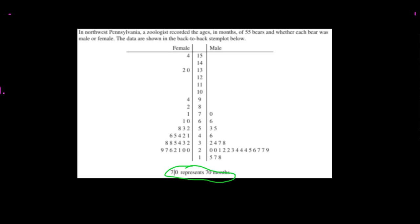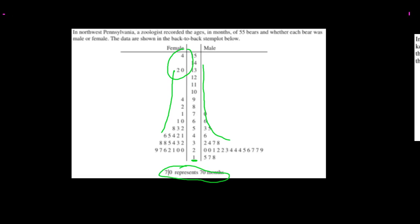Both distributions have similar shapes. Don't be tricked by the layout — smaller numbers are at the bottom, and bigger numbers extend to the right, so both are actually skewed to the right. The females are much more spread out, ranging from about 20 months up to 415 months, while the males range from about 15 to 70 months. There appear to be a couple of outliers among the females. Because both are skewed right, the mean will be a bit higher than the median for both.